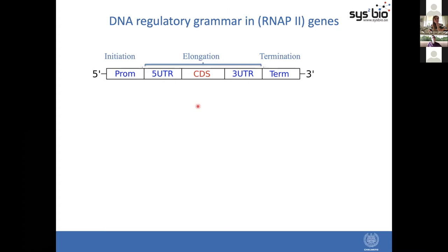So here we have a gene regulatory structure as we define it. The CDS has the coding regions — the coding sequence of a gene — and also different regulatory regions: the promoter, untranslated regions, and the terminator region. All of these are involved in the three different steps of transcription, which are initiation, elongation, and termination.